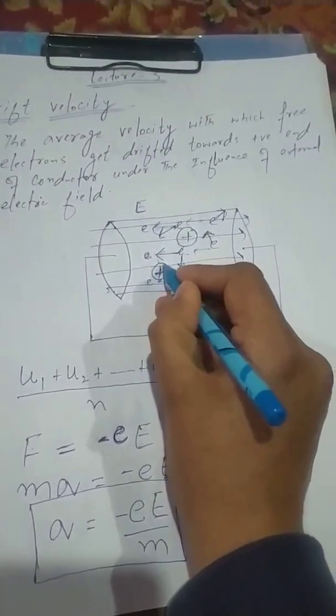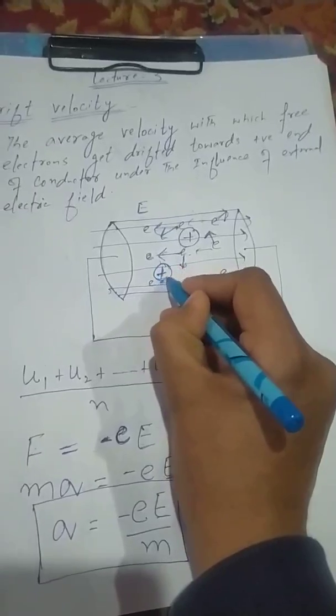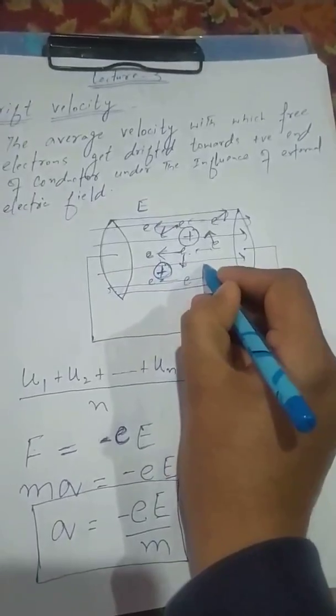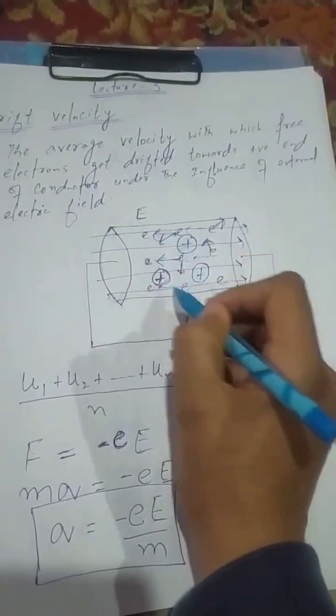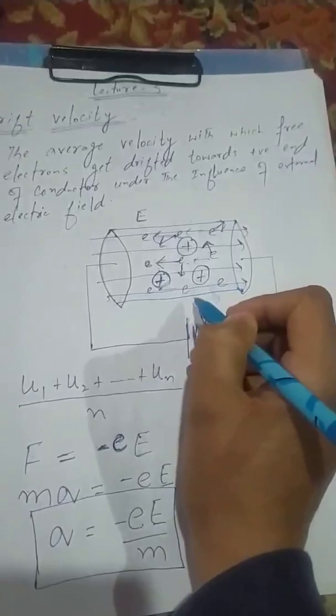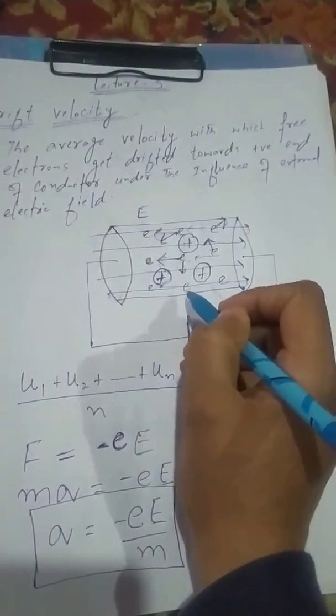This item is called a kernel — there are positively charged kernels as well. So in a conductor there are free electrons and positively charged kernels (lattice ions).